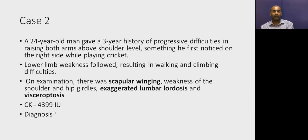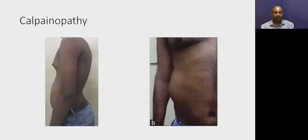Case 2: A 24-year-old man with a three-year history of progressive difficulty raising both arms above shoulder, first noticed on the right side while playing cricket. Lower limb weakness followed, resulting in walking and climbing difficulties. Examination showed scapular winging, proximal limb girdle weakness, exaggerated lumbar lordosis, and visceroptosis — abdominal muscle weakness with visceral protrusion. CK was around 4,000. The diagnosis is calpainopathy.